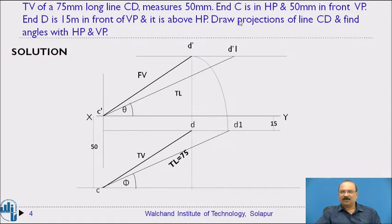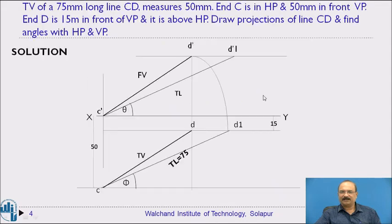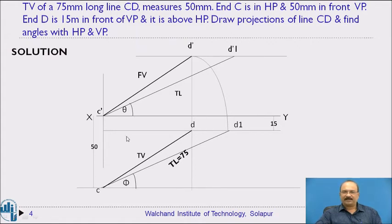As required by the problem, draw the projection of line CD and find the angles with HP and VP. The angle made by the front view line C dash–D dash with the XY line above the XY line is the angle theta — the angle the line makes with HP. The angle below the XY line in the top view gives phi — the angle the line makes with VP. The angle made by the front view length with the XY line and the angle made by the top view length with the XY line are the apparent angles.